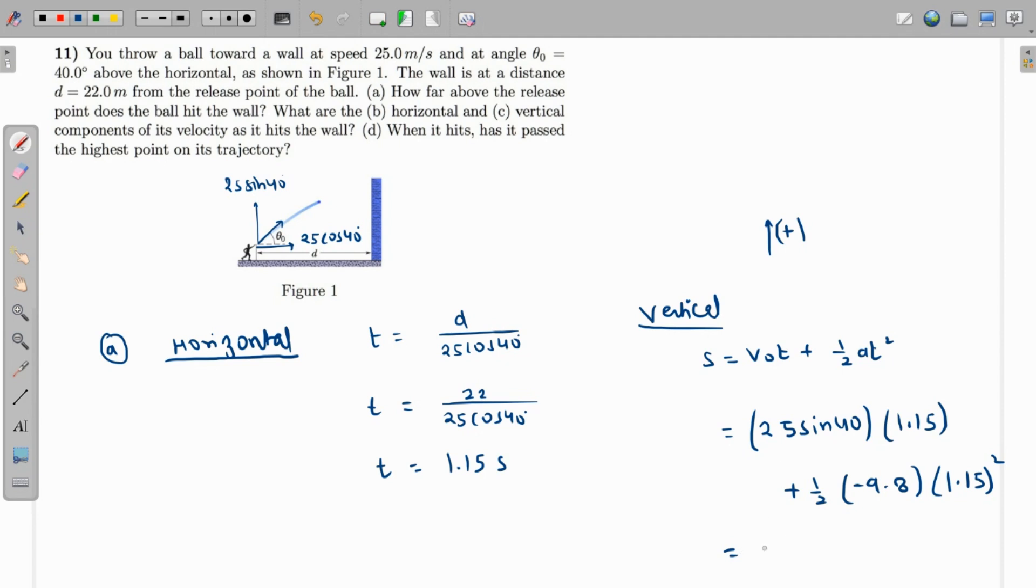coming as close to 12 meters. That is the answer to part a, which is how far above the release point does the ball hit the ground. So ball hits the ground at 12 meters above.